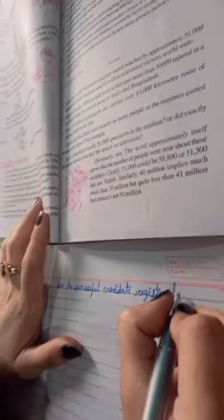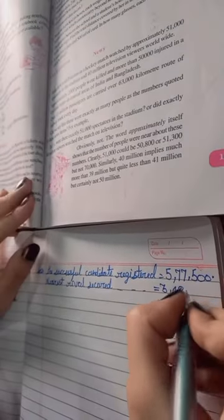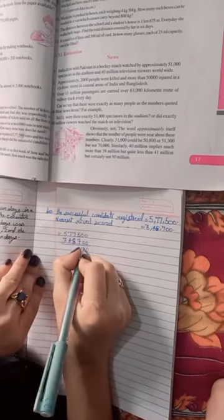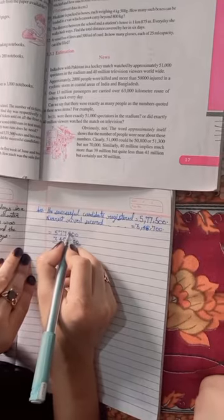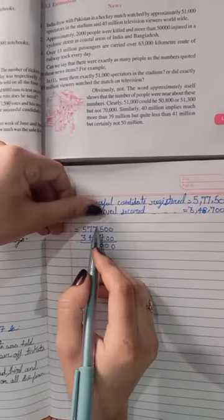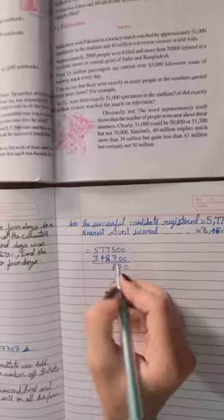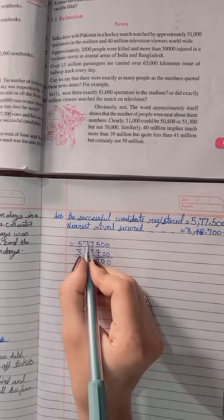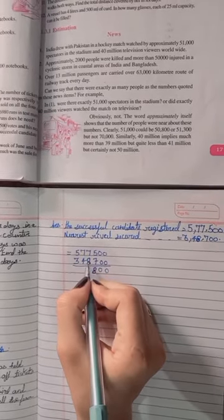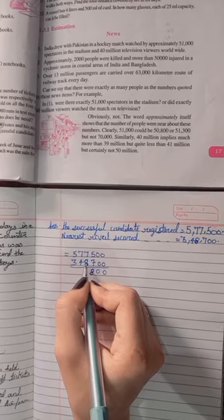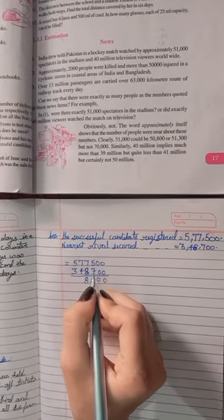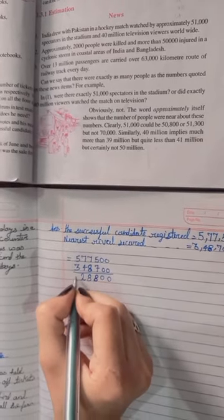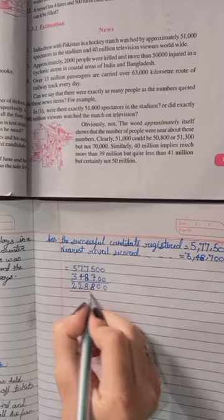To find the margin we subtract. We write the successful candidate's votes and the rival's votes below. We perform the subtraction starting from the ones place: 0 from 0 is 0, then 0 from 0 is 0. With borrowing, 7 minus 7 is 0, then 8. Continuing the subtraction with carrying as needed, we get the answer: 2 lakhs 28,800 votes.